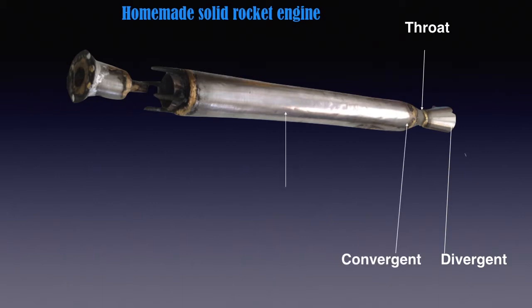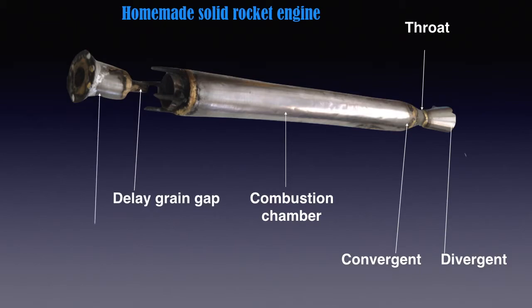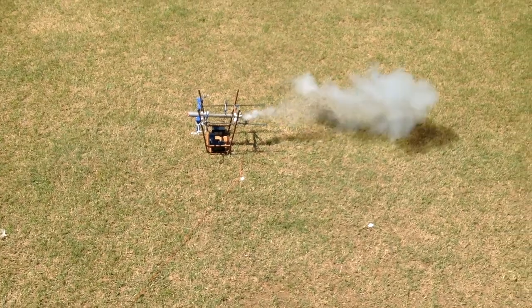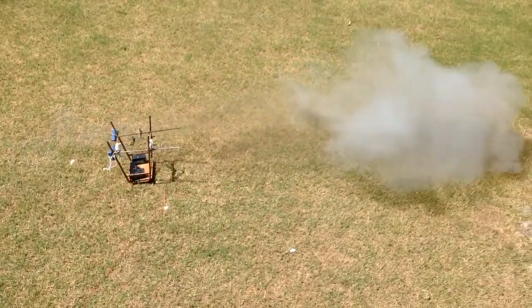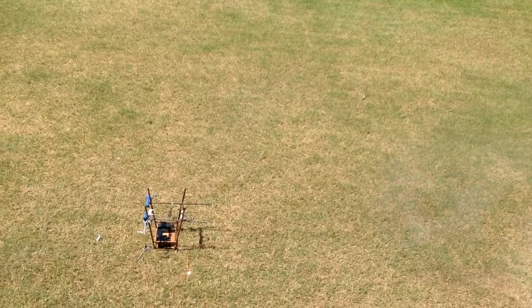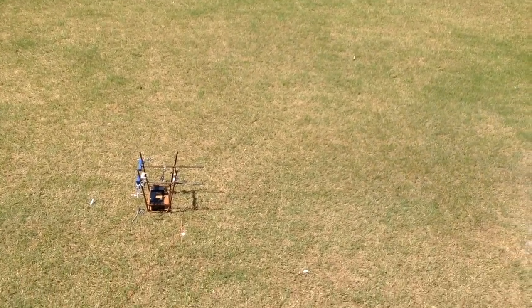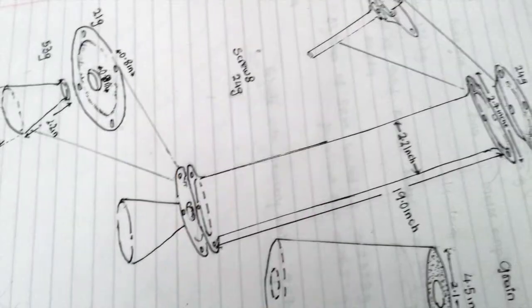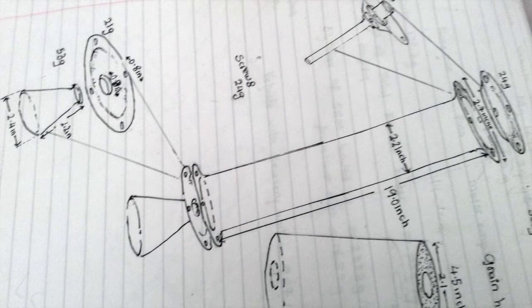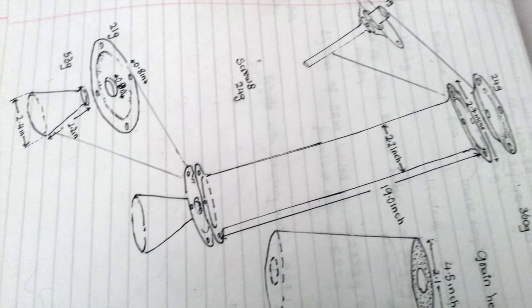Here are the parts of the solid rocket motor that have been assembled. Let's go ahead and do a static test. After that short static test, I realized that there is a problem with the convergent part of the solid rocket motor, so I redesigned it to the current version you're looking at here.